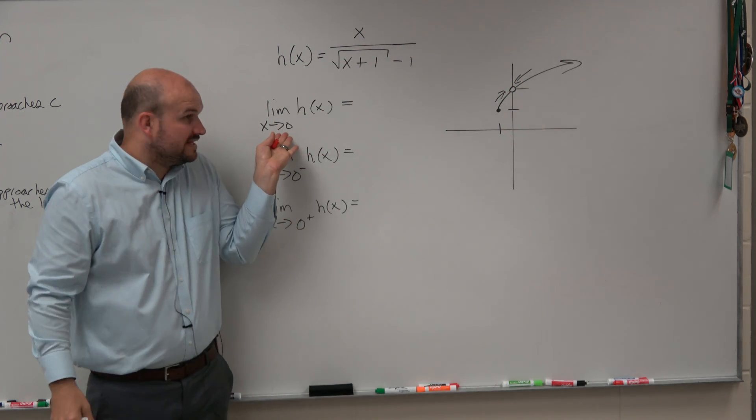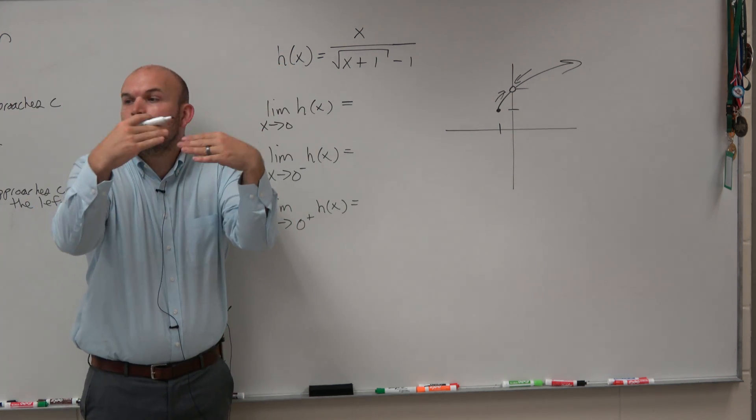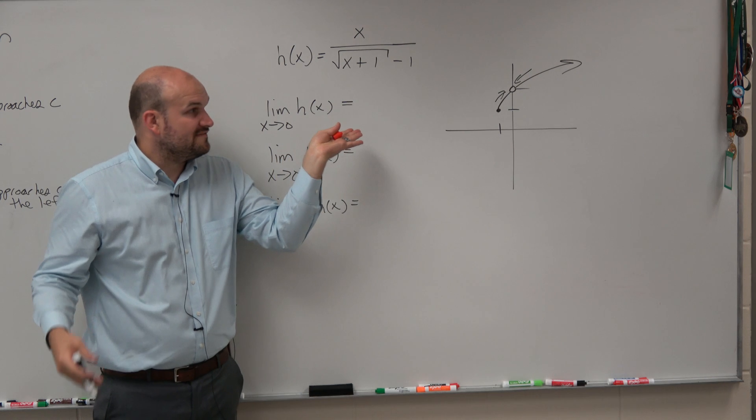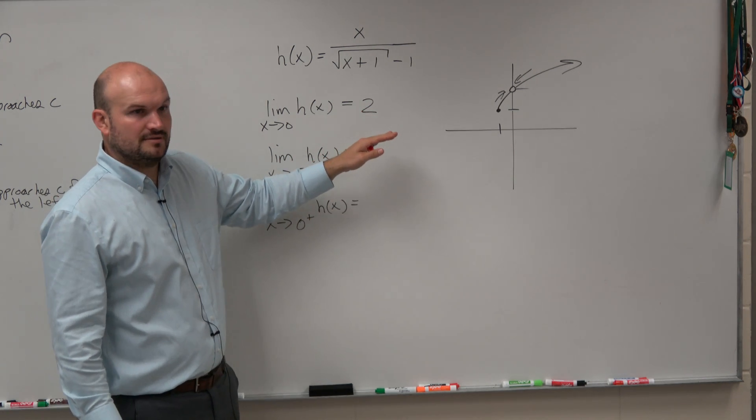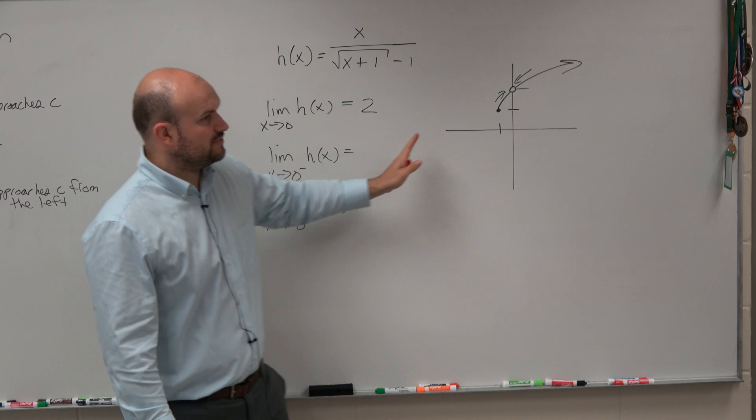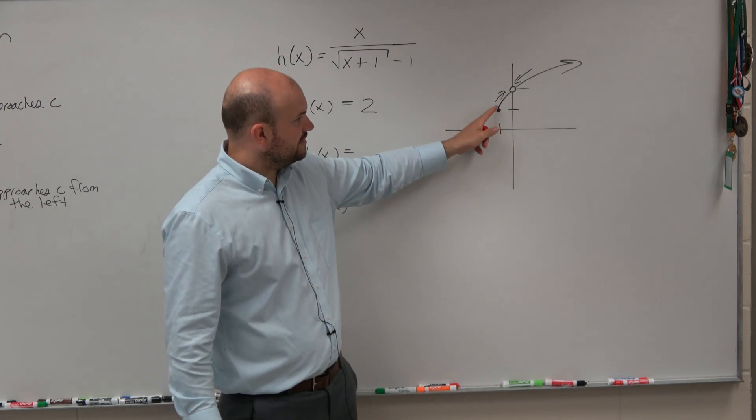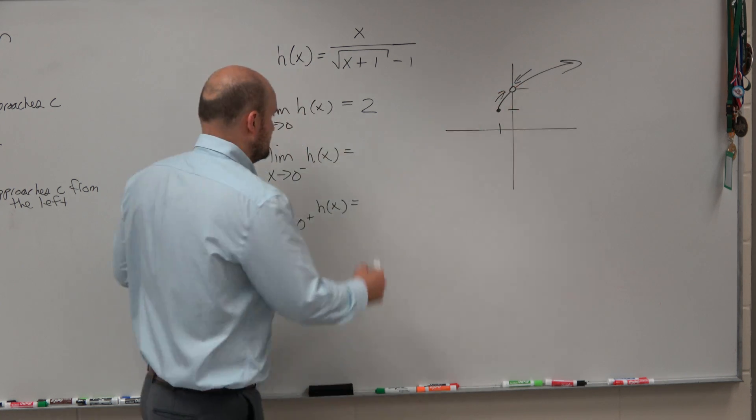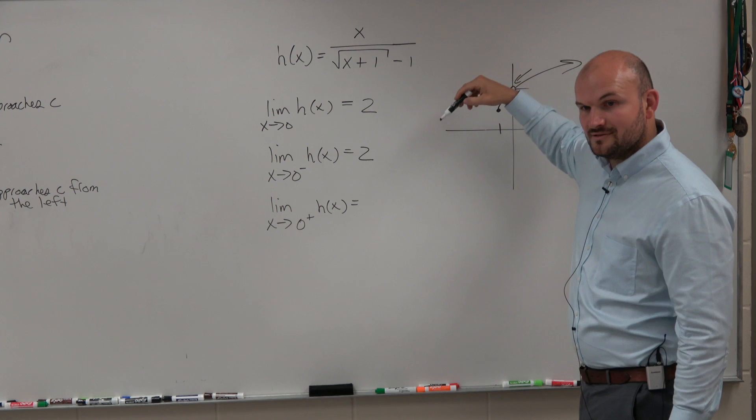So does it make sense, then, that the limit exists at 0? Because it's just approaching. What is it approaching from the left and right? So that value is 2. What is it approaching just from the left? What is it getting really close to? From the left, what is it getting really close to? 2. From the right, what is it getting really close to? 2.